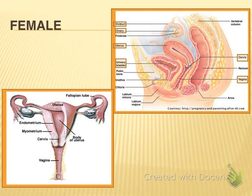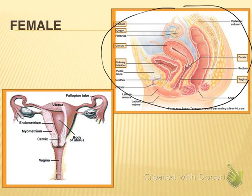On to the female anatomy. The diagram in the upper right-hand corner shows the highlighted items you are responsible for knowing: the oviduct, ovary, uterus, urinary bladder, cervix, and vagina. There are two ovaries, which is where the eggs are produced. They also act as an endocrine gland, secreting both estrogen and progesterone, which are important hormones in the menstrual cycle.